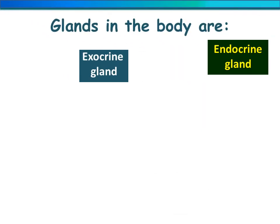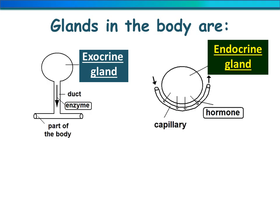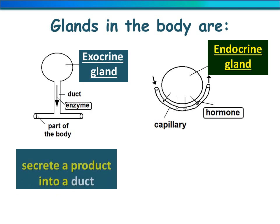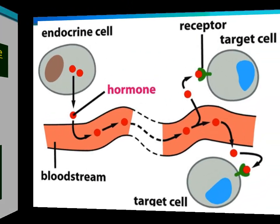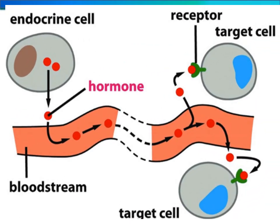Glands in the body are either exocrine glands or endocrine glands, but we study only endocrine glands. Endocrine glands secrete substances called hormones directly into the blood without passing through a duct. They have no duct — they are ductless — and they have a rich blood supply. These hormones then travel to the target cells that each hormone affects.